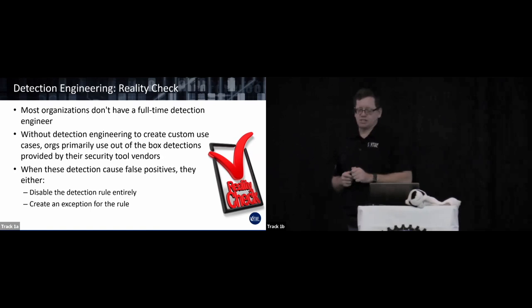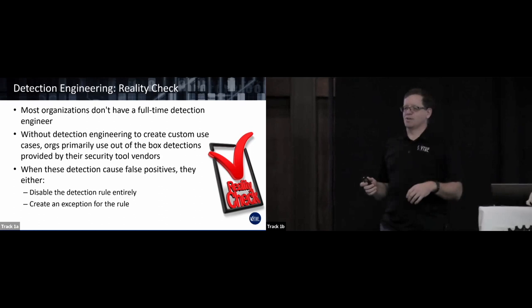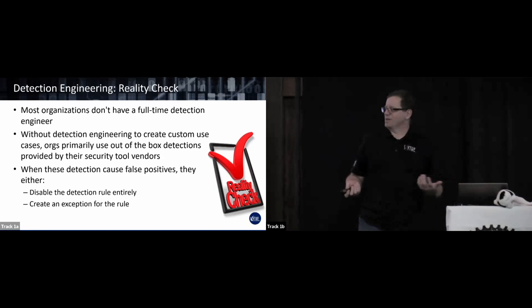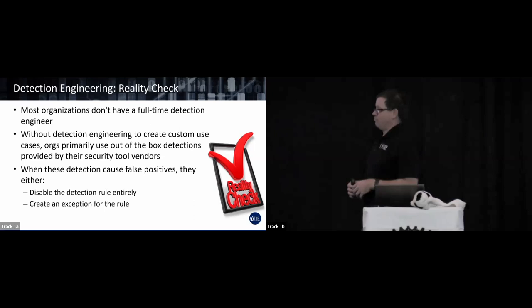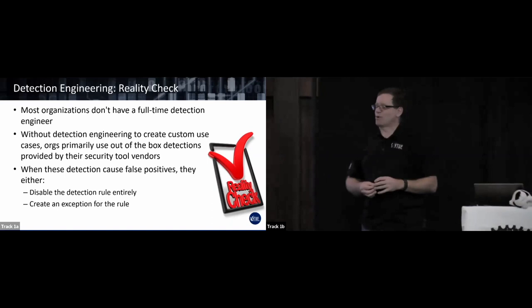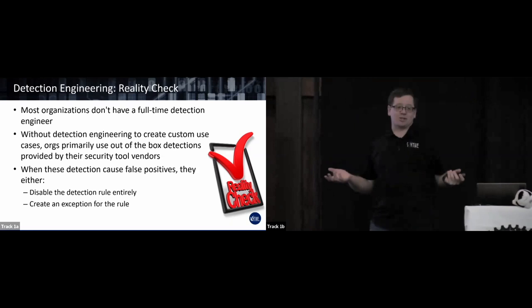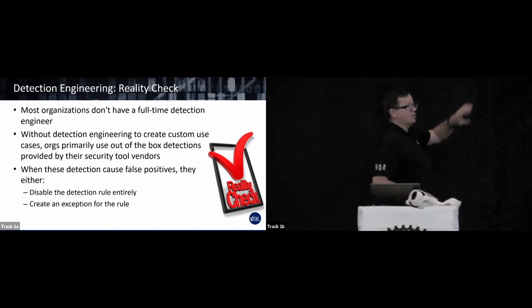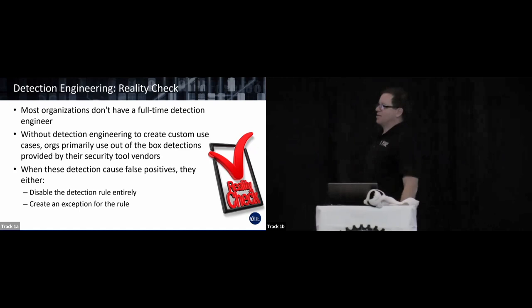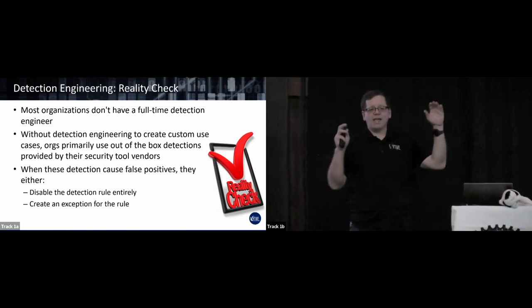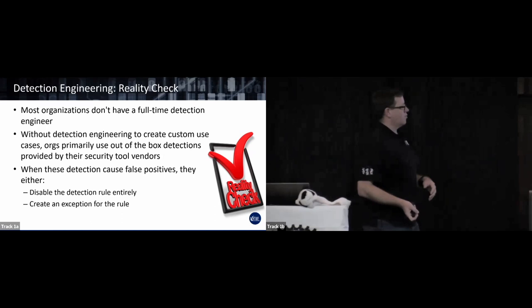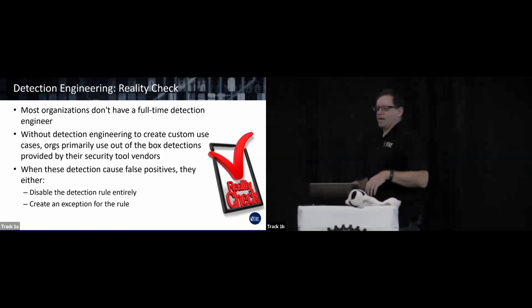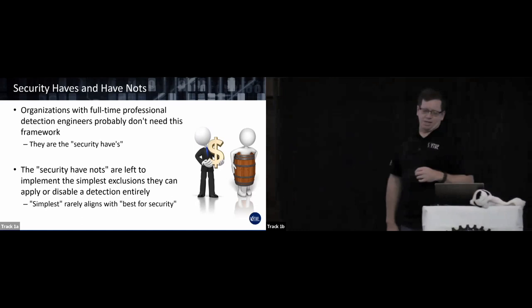I pitched this model to smart detection engineers and they said 'you don't need this' — because they're full-time detection engineers. Most organizations don't have those. Some call them level-two SOC analysts — the person who's been there longer than six months writing use cases, or simply using out-of-the-box rules from the EDR or SIEM. When a new update drops they apply it, it generates too many false positives, and they either eliminate it entirely or let it run. By writing good exclusions, we can leave detection rules in place generating a manageable amount of alerts.